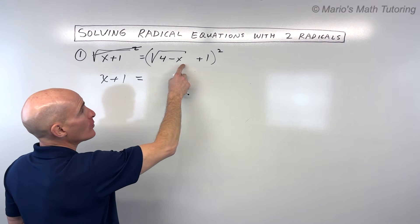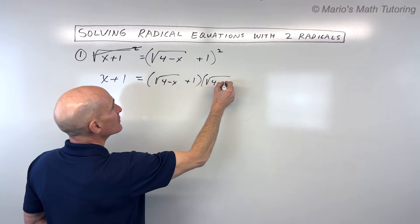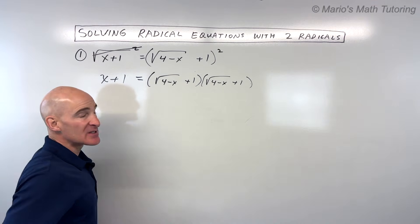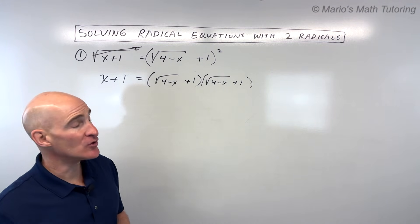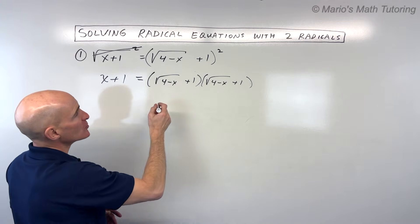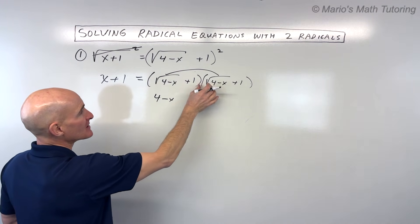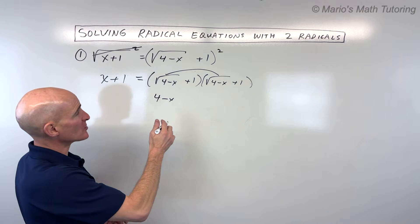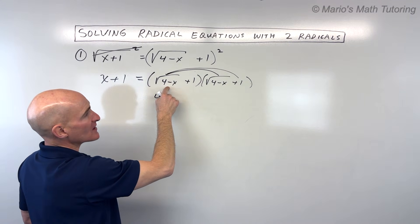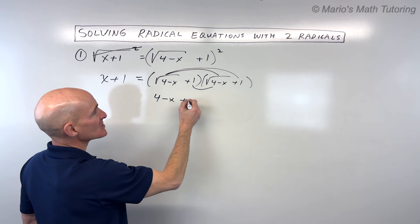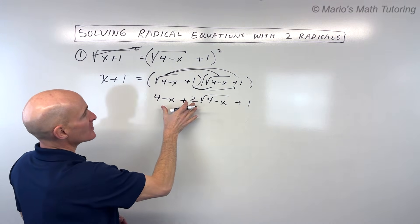When you square something and it's a binomial, you have to think of that as that quantity times itself — write it right next to itself so you've got two of them. The mistake students sometimes make is they just square each term separately and miss one of the terms. You want to FOIL this out or distribute twice. So square root of four minus x times square root of four minus x gives us four minus x. Distributing gives us two times the square root of four minus x, plus one.